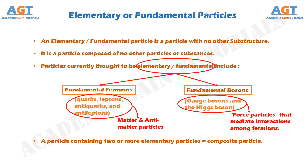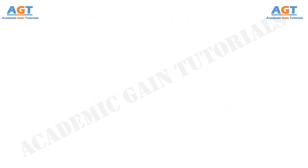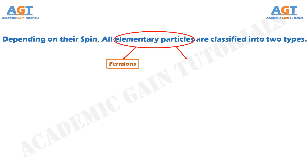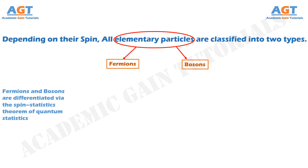So let's have a detailed look at the classification of the elementary or fundamental particles. Depending on their spin, all elementary particles are classified into two types: either bosons or fermions. These fermions and bosons are differentiated with the help of the spin statistics theorem of quantum statistics.